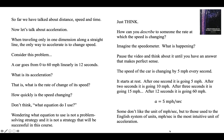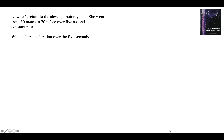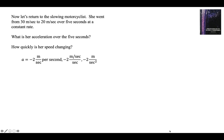Some don't like the units of miles per hour per second, but to those used to the English system of units, miles per hour each second is the most intuitive unit of acceleration. Now let's return to the slowing motorcyclist — she went from 30 meters per second to 20 meters per second over 5 seconds at a constant rate. Her speed is changing by negative 2 meters per second each second. There are three different ways to write that: minus 2 meters per second per second, minus 2 (m/s)/s, and minus 2 meters per second squared. Meters per second each second describes the acceleration most intuitively.